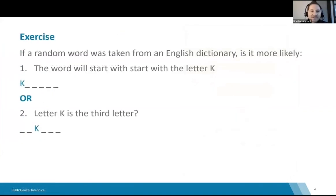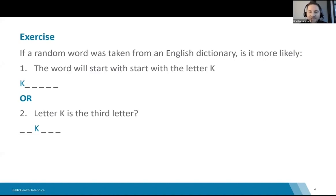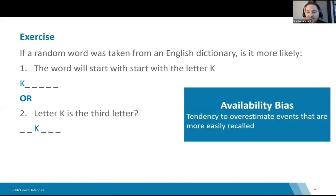A quick exercise to illustrate cognitive biases: if you take a random word from the English dictionary, is it more likely to start with the letter K, or have K as the third letter? Most people say it starts with K — we can name kitchen, kangaroo, kite. However, the correct answer is that more words have K as the third letter. The reason we usually give the wrong answer is because it's much easier to remember words that start with K. This is called availability bias — the tendency to overestimate events that are more easily recalled.